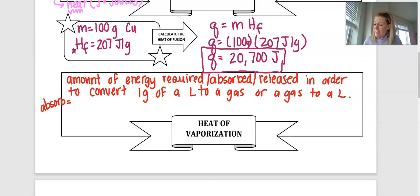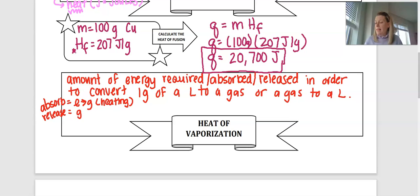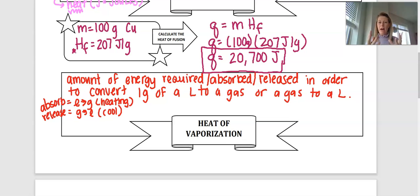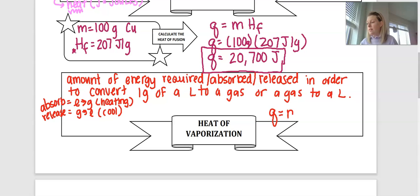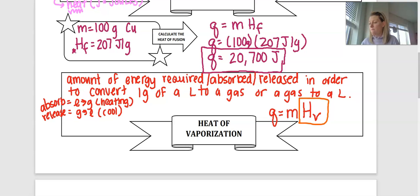Absorption occurs during the liquid to gas phase change on the heating curve, where we are adding heat energy. Release occurs when going from gas to liquid during cooling. For copper, melting or boiling requires absorbing heat, while condensing or solidifying requires releasing heat. The equation is Q equals m times H sub V, where H sub V is the heat of vaporization.